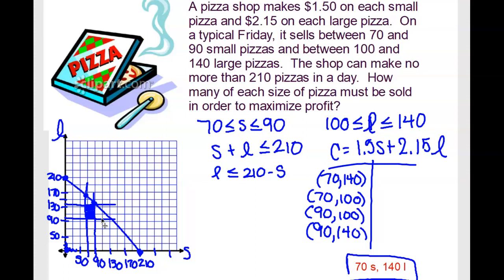So what you have to do is find your vertices intersection points. And then what we're going to do is plug in those points to our profit function. And then we're going to find our profits at each of those points. So you would take 1.5 times 70 plus 2.15 times 140, and you get 406.